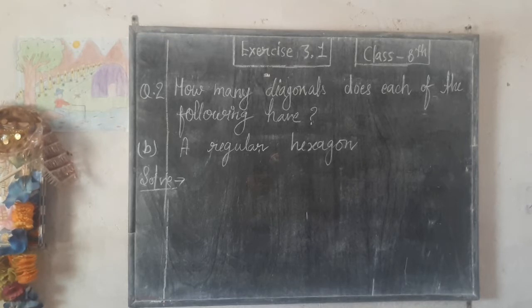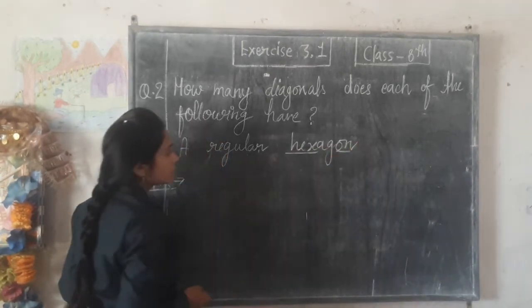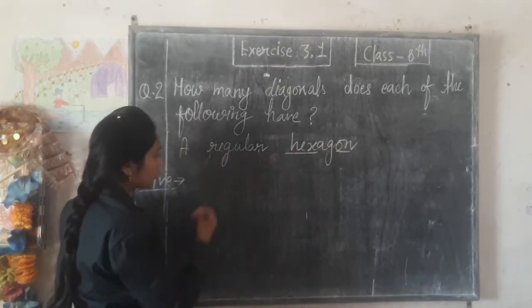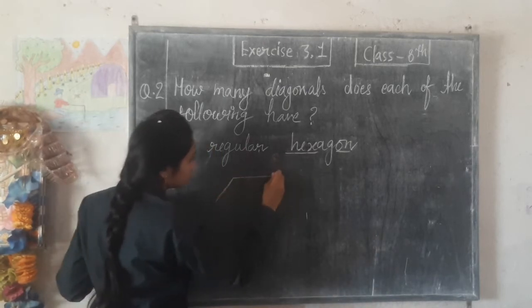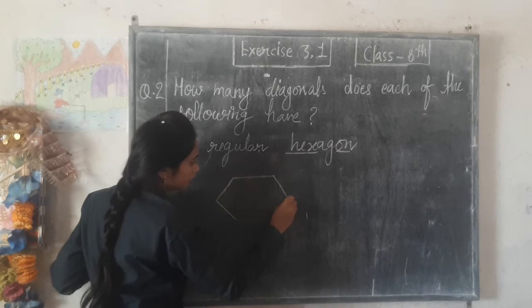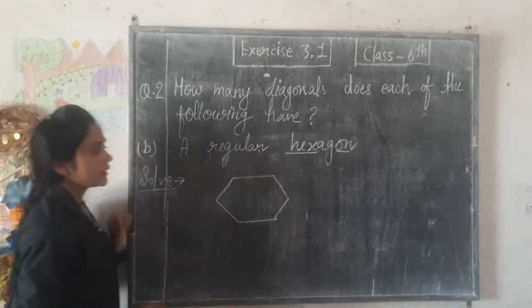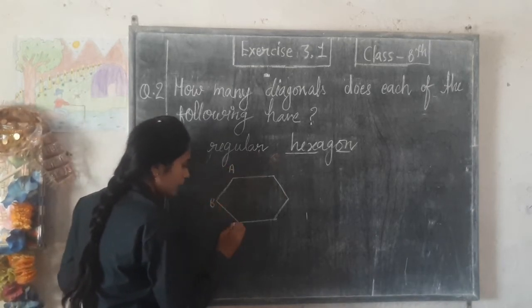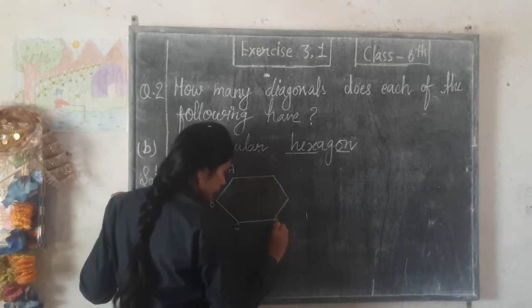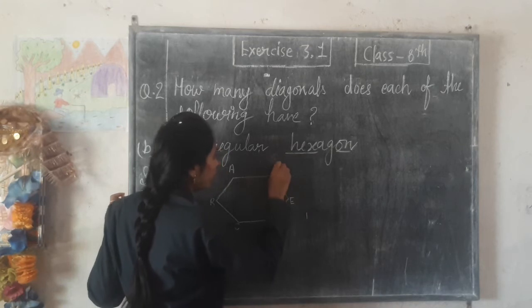Question number B: a convex hexagon with only 6 sides. So we label the vertices: 1, 2, 3, 4, 5, and 6 — that is A, B, C, D, E, and F.